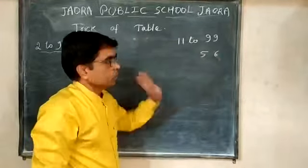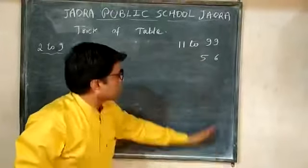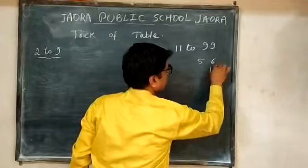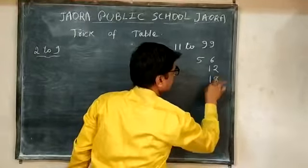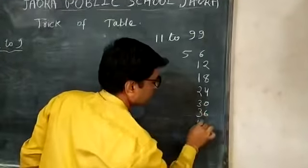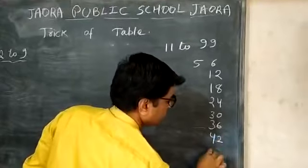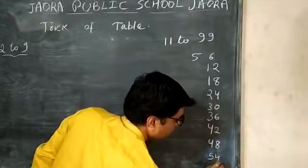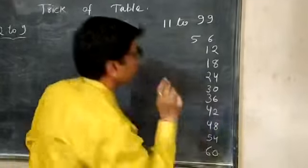So what should we do? First write the table of 6 and write the table of 5. So 6: 12, 18, 24, 30, 36, 42, 48, 54, and 60.